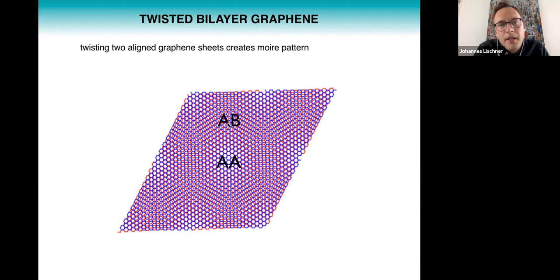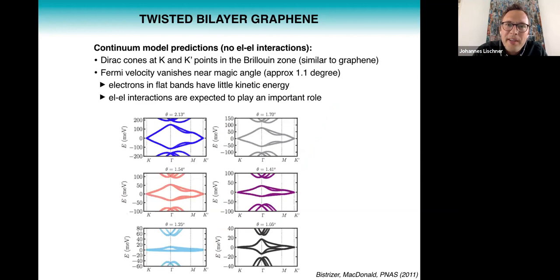This material was first studied about 10 years ago by theorists. In particular, Bistritzer and MacDonald calculated the band structure of this material using a continuum model that doesn't include electron interactions. And what they discovered was that the electronic structure of twisted bilayer graphene is quite similar to the electronic structure of monolayer graphene.